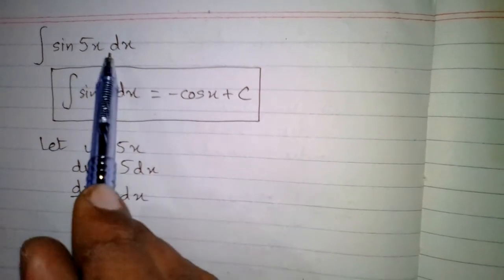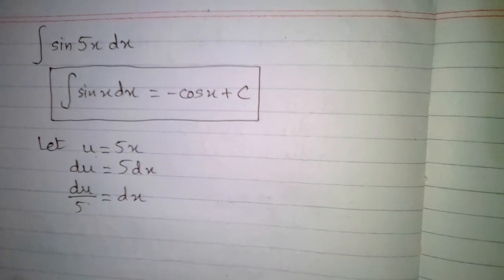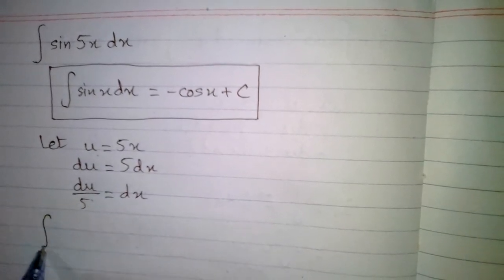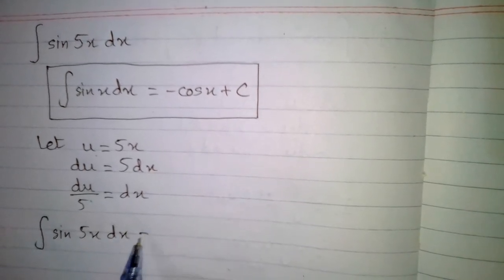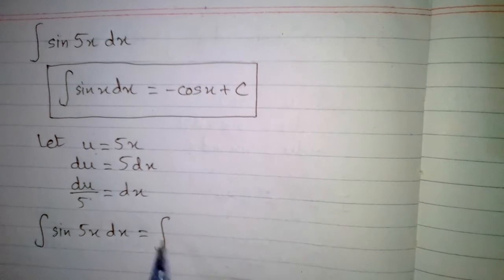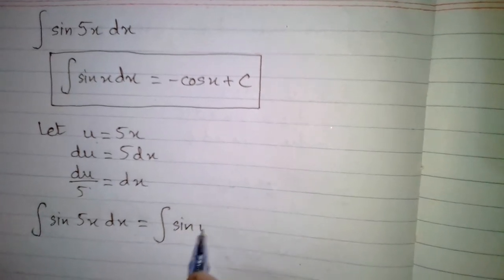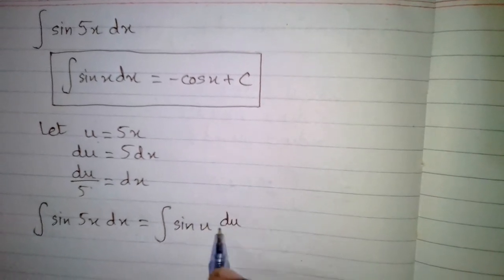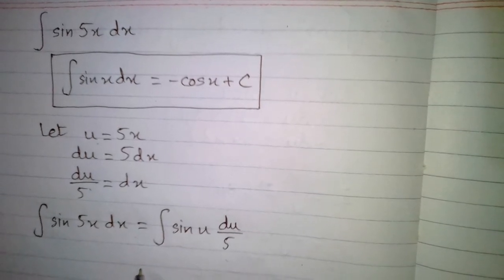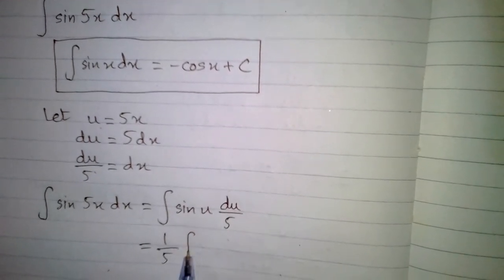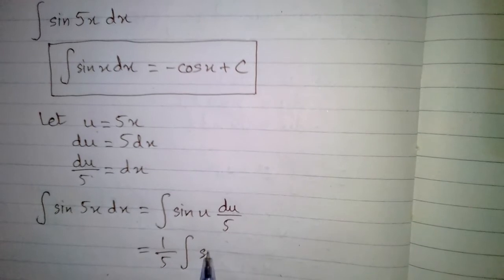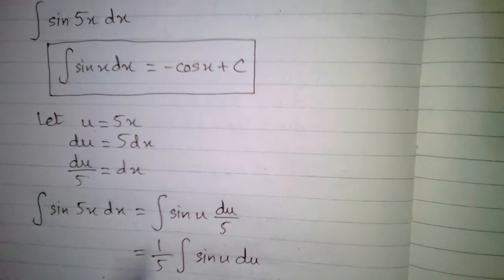We put u in place of 5x, and in place of dx we put du upon 5. So the integral of sin(5x) dx is equal to the integral of sin(u) du upon 5. We can write the 5 in the denominator as 1 upon 5 in front of the integral, giving us 1 upon 5 times the integral of sin(u) du.